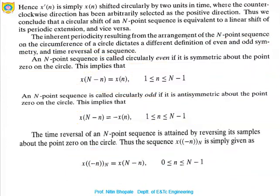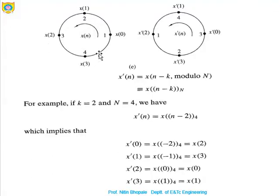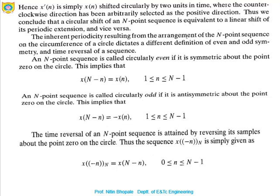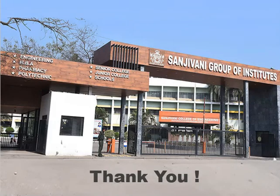This is all about the circular symmetry property. In terms of the circle, we have seen how to rearrange the sequence: x(0), x(1), x(2), x(3) written in a particular manner; if it is folded, it will be in reverse — the exact opposite side. So x(1) will come over to the other position. This completes the symmetry property. Thank you everyone.